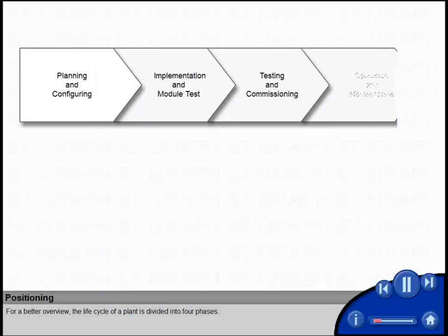For a better overview, the life cycle of a plant is divided into four phases.